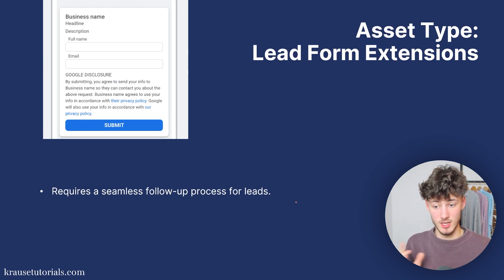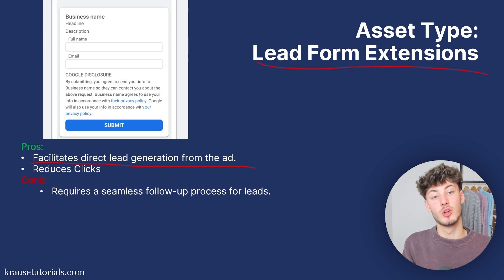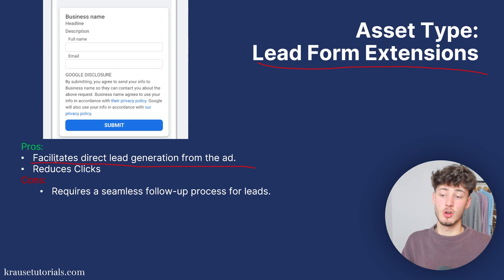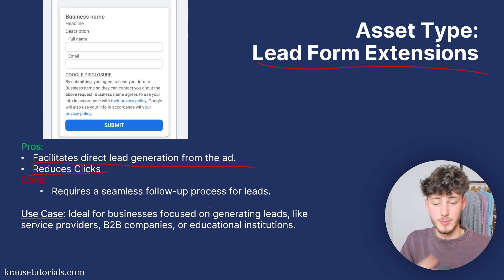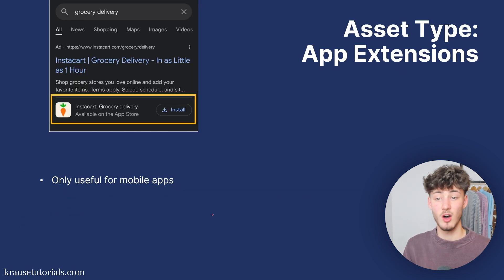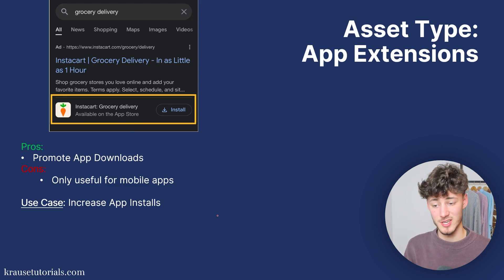The lead form extension is super powerful — it facilitates direct lead generation from the ad. Instead of clicking through to your website, people fill in their information directly within Google, which reduces the number of steps to get a successful lead. The con is that you need a follow-up process to convert these leads into customers. Ideal for service providers, B2B companies, or educational institutions. App extensions are useful for promoting app downloads and increasing app installs — only relevant for mobile apps.